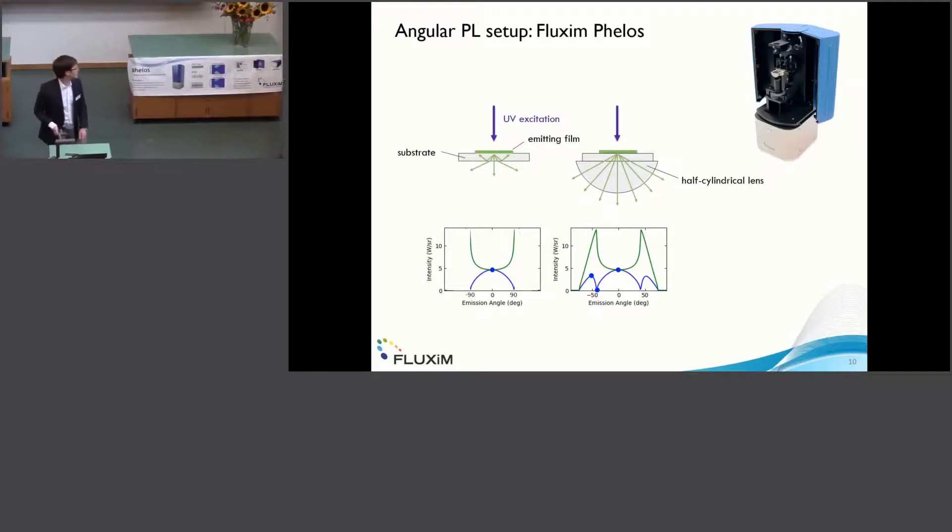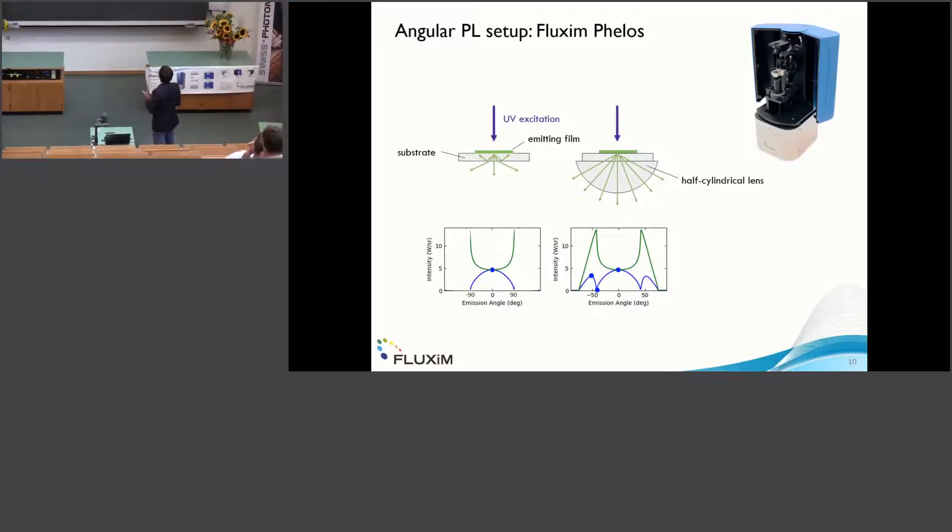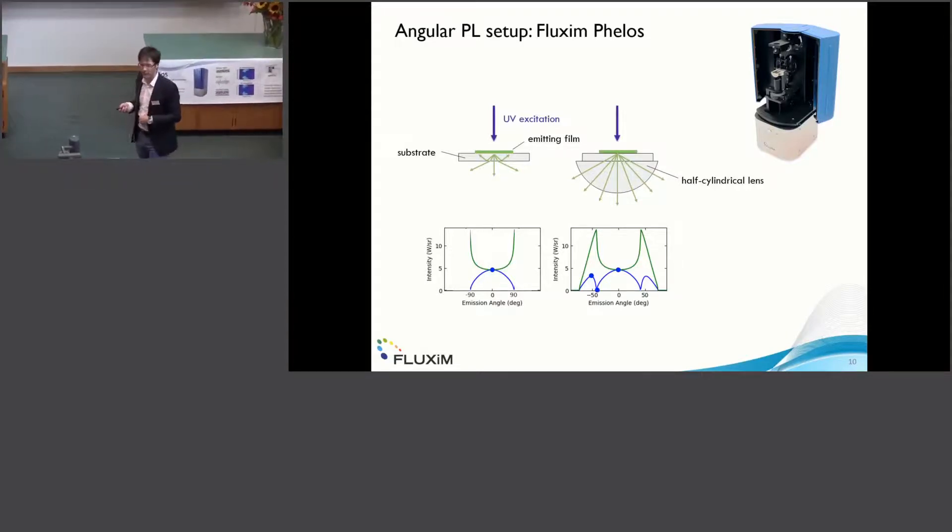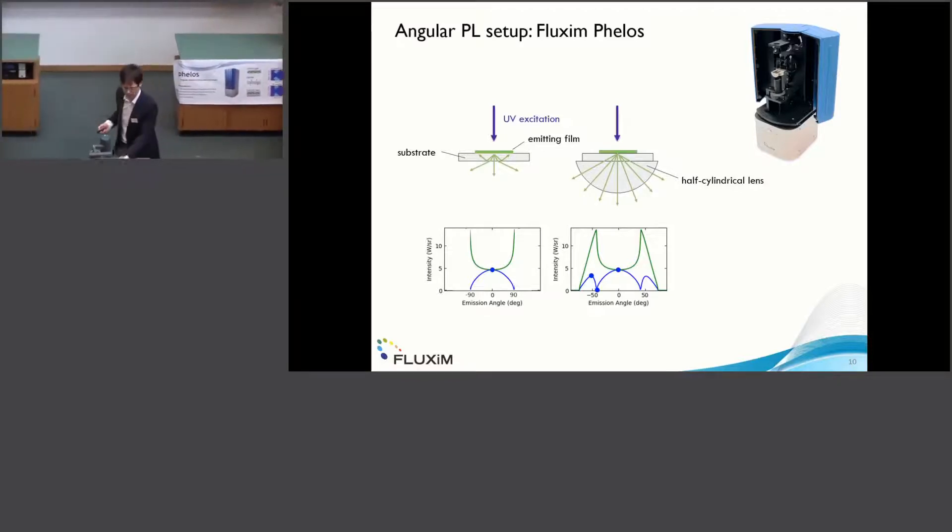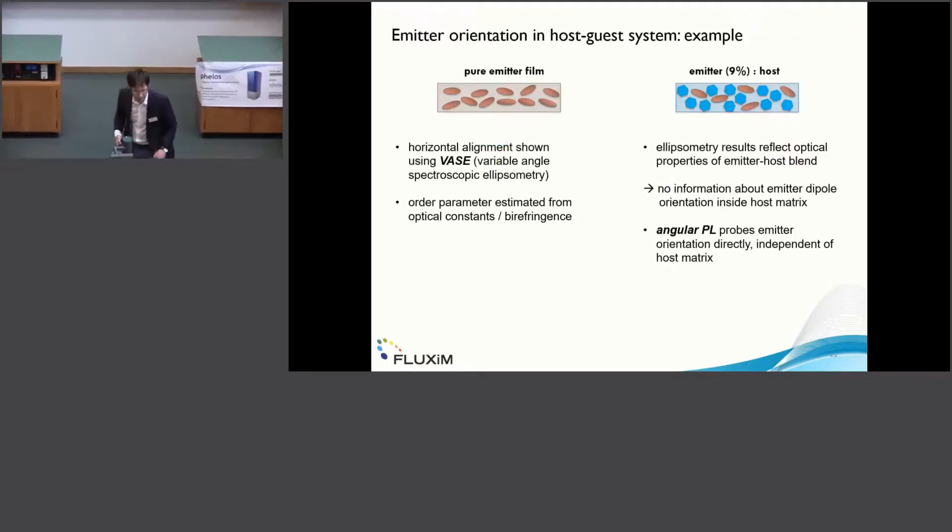We have very recently developed this new VELOS instrument. In this VELOS instrument we use a half-cylindrical lens, and using this lens we can actually also extract the modes which otherwise would be captured in the substrate. With this half-cylindrical lens we can also obtain these modes which are very crucial in order to extract the dipole orientation, otherwise we would only see this very simple picture on the bottom-left.